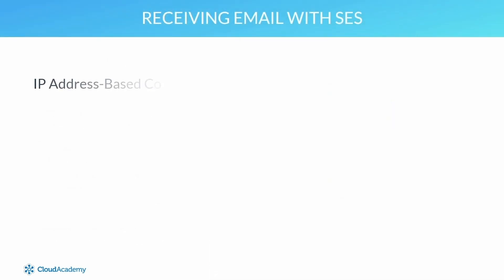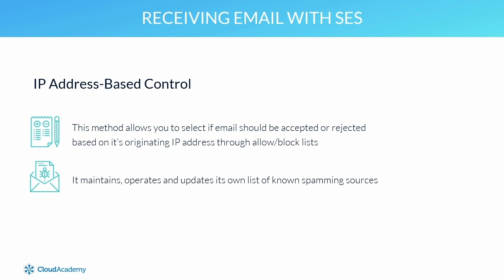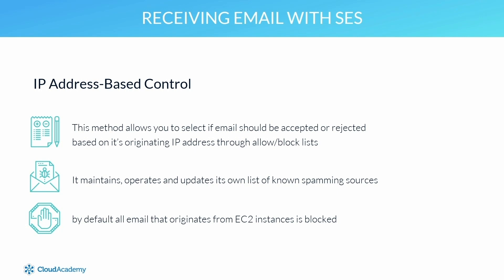IP Address Based Control defines what happens to your email based on its source IP address, allowing you to accept or reject emails based on their originating IP. Through allow and block lists, it helps prevent SES from delivering emails from unwanted sources while allowing emails from known and trusted sources. Behind the scenes, SES maintains and updates its own list of known spamming sources. By default, all email originating from EC2 instances is blocked, so you must add them to your allow list if required.